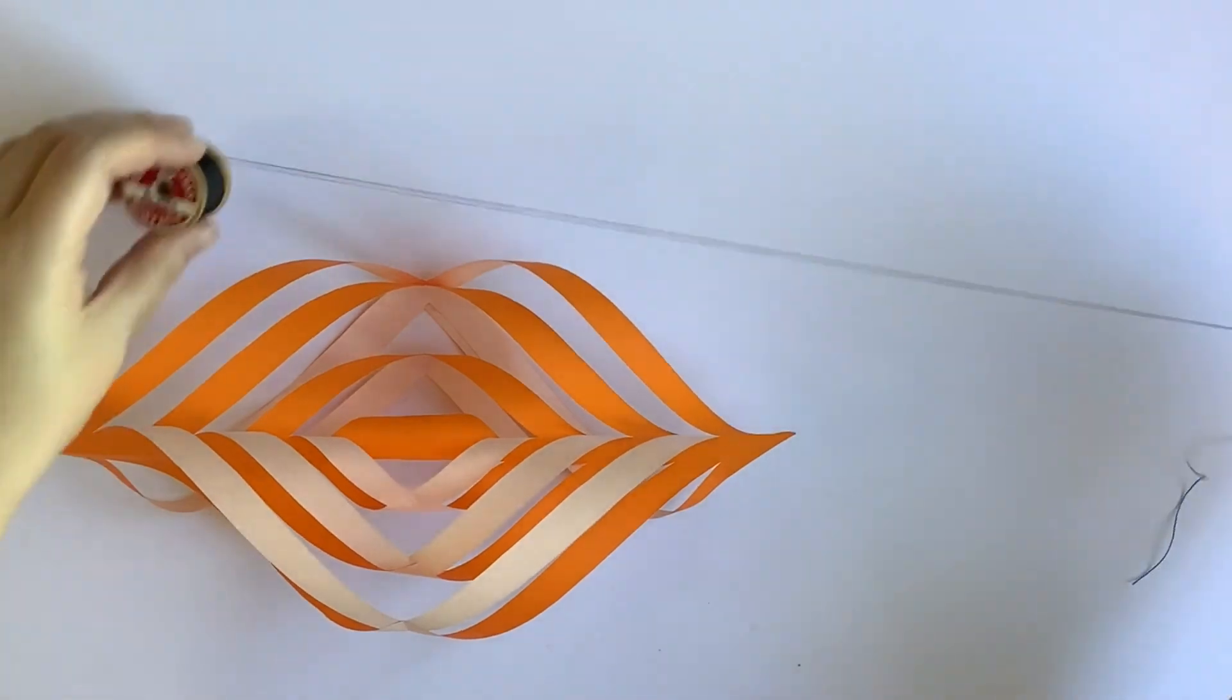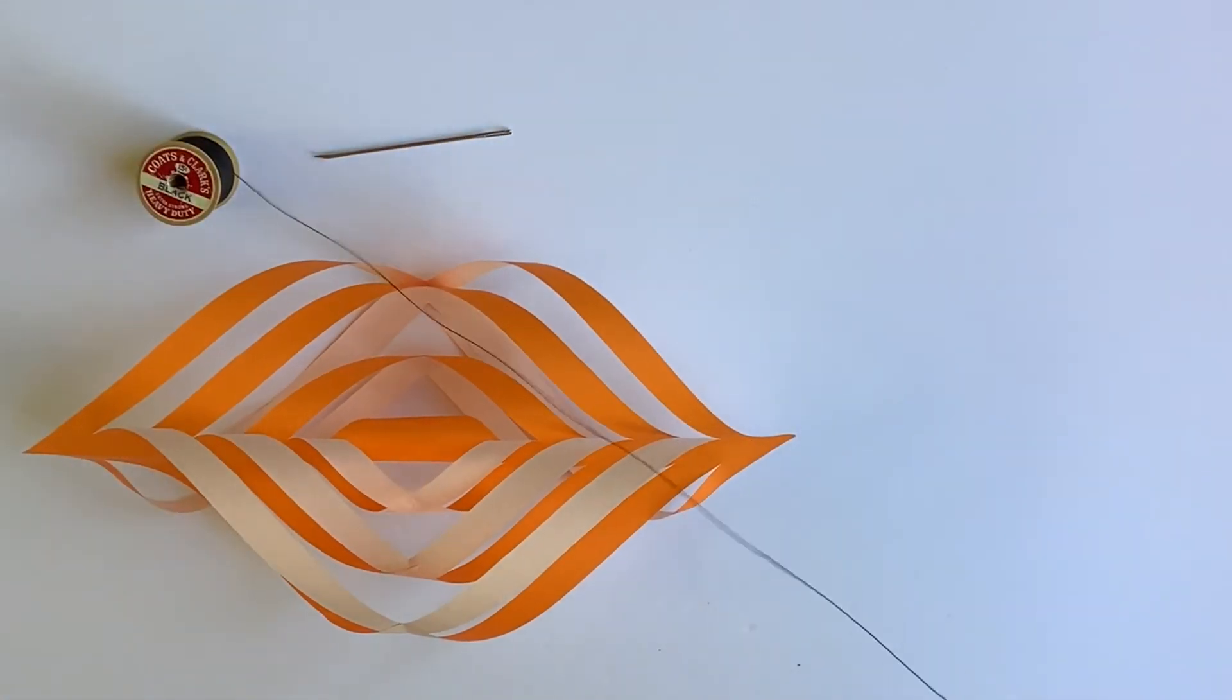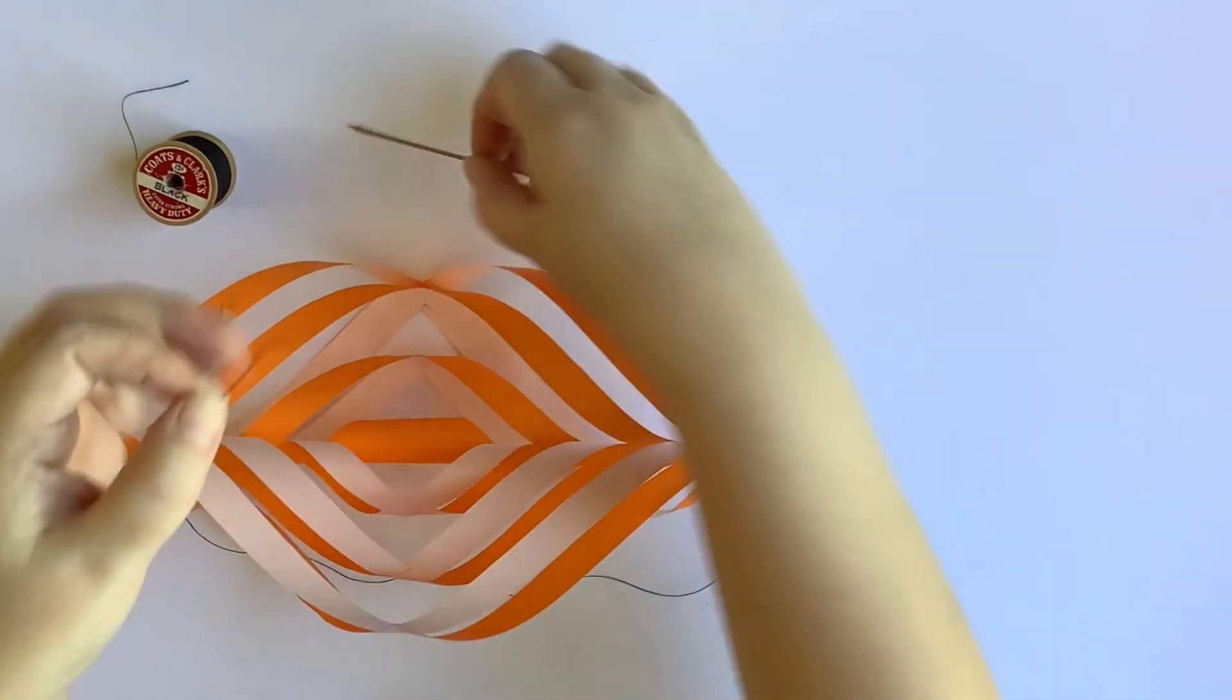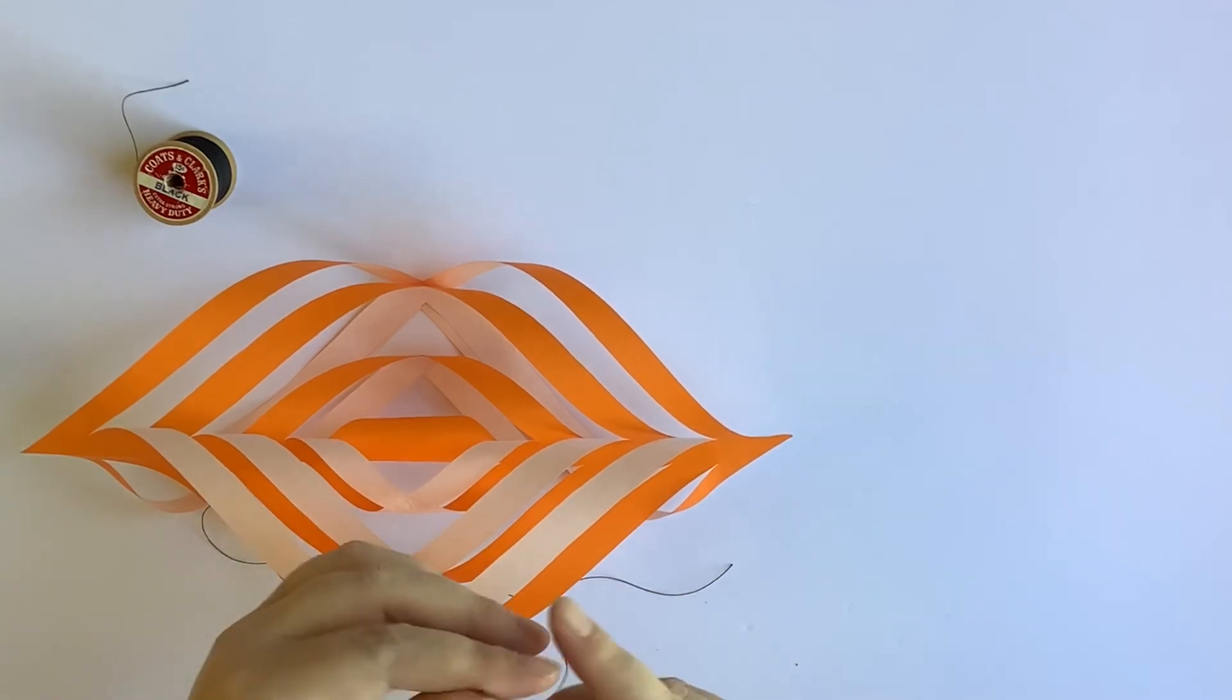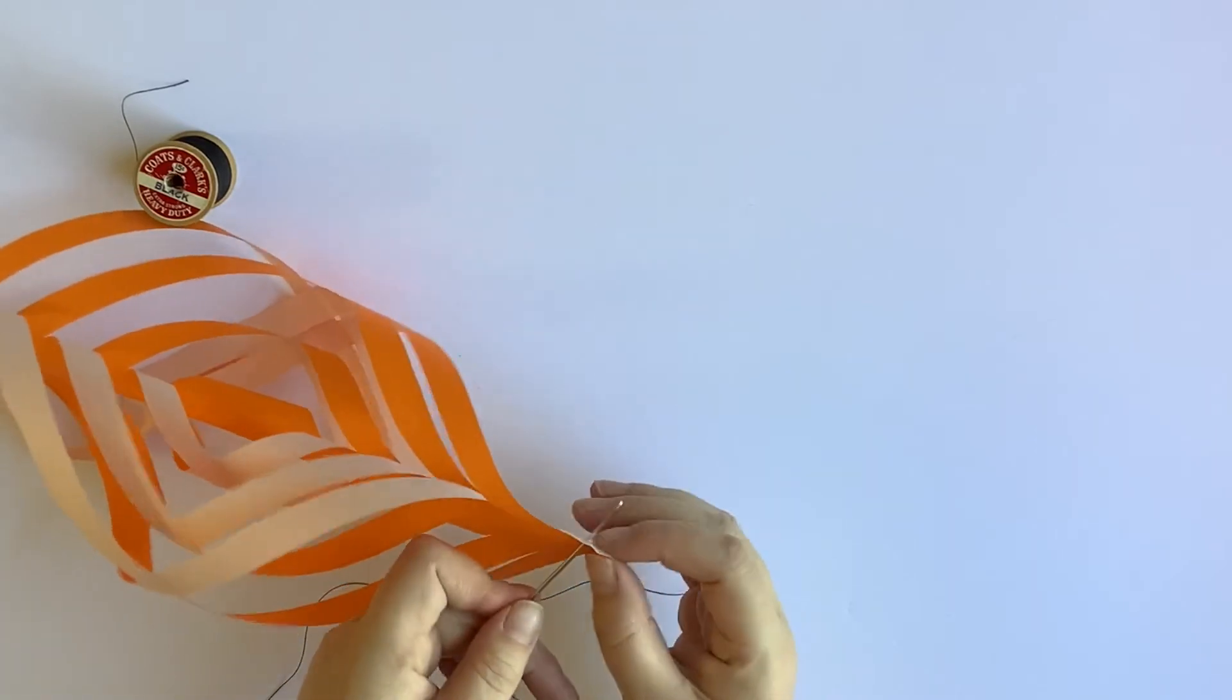I'm going to cut the piece of thread and thread it through my needle. And then I'll use the blunt needle to pierce the top of the wind catcher and pull my thread through.